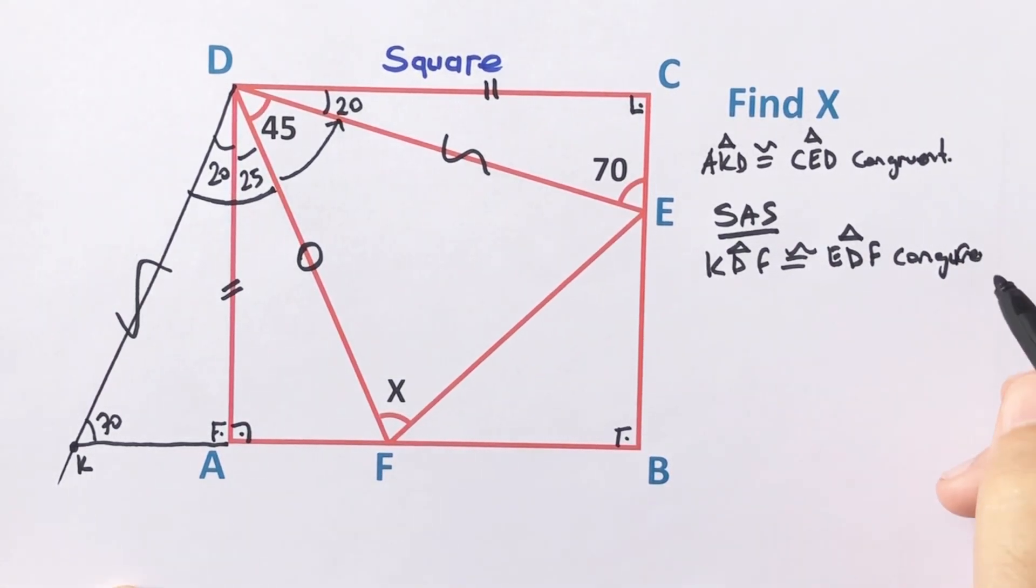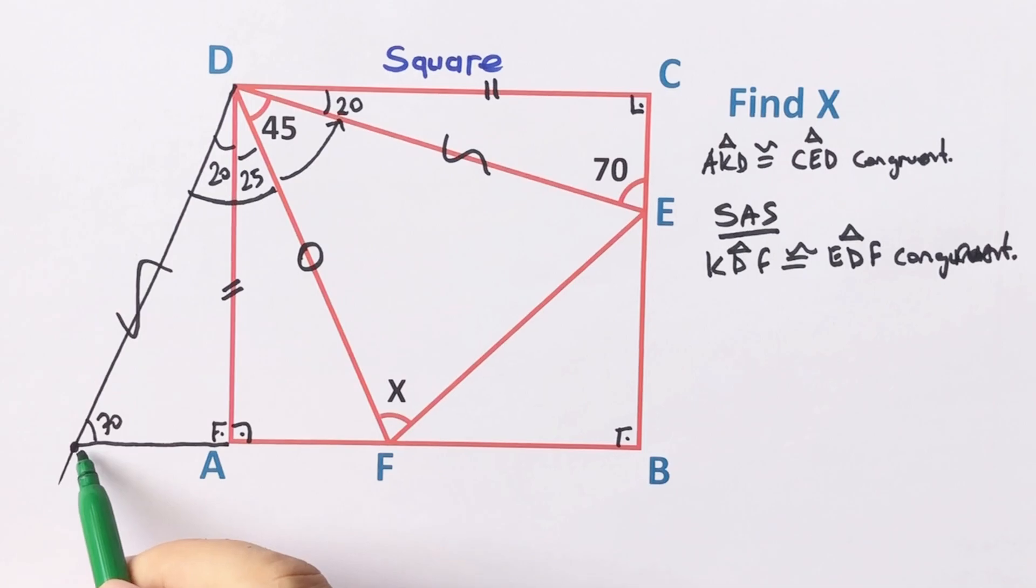So we know that congruent triangles have same sides and angles. Therefore opposite of the 45 degrees must be equal, right?